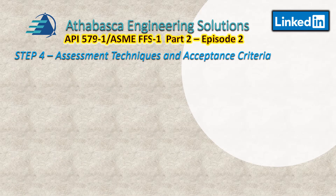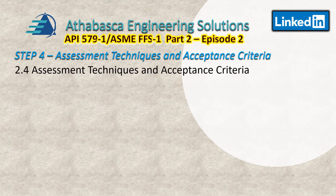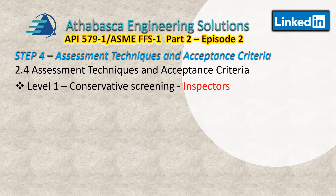Now, step four is the assessment techniques and criteria, found in section 2.4 of the 2016 standard. There are three famous levels. Level 1 assessment procedures are intended to provide conservative screening criteria that can be utilized with a minimum amount of inspection and component information — just to give a feel for the condition of the unit. A level 1 assessment may be performed by plant inspection or engineering personnel, provided it is reviewed by a professional engineer.